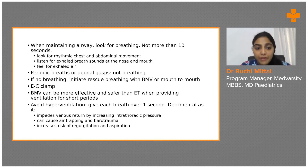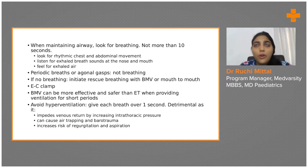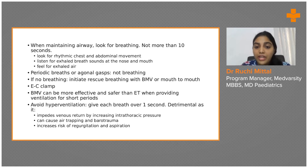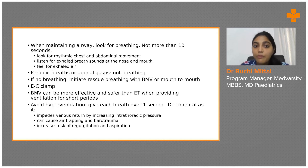When performing bag-and-mask ventilation, avoid hyperventilation and give each breath over one second. Hyperventilation increases intrathoracic pressure, which impedes venous return to the heart — you need negative intrathoracic pressure for venous return. Additionally, air trapping can cause barotrauma to the lungs, and there is increased risk of regurgitation and aspiration.